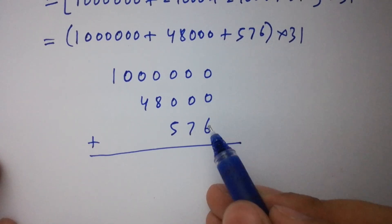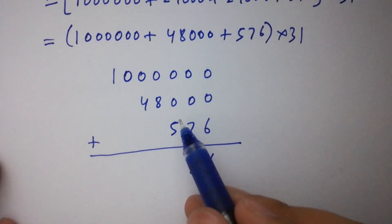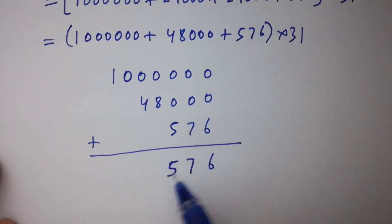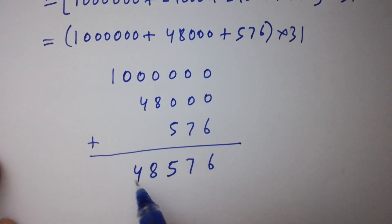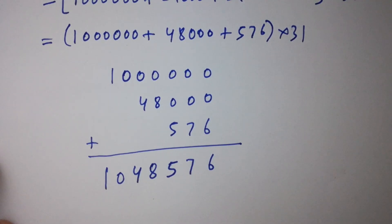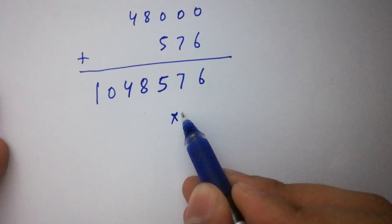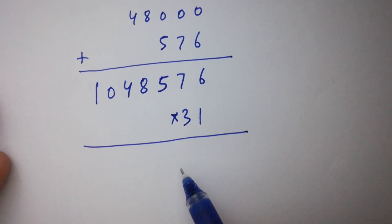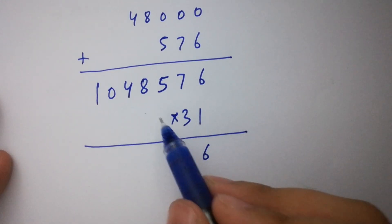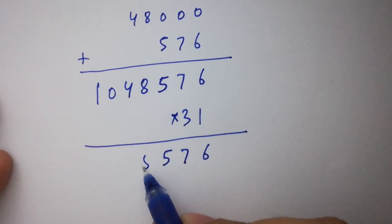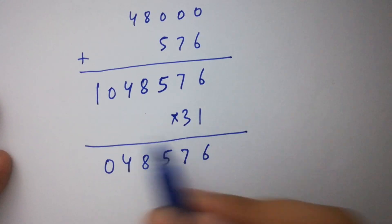Adding digit by digit: 0 plus 0 plus 6 is 6; 0 plus 0 plus 7 is 7; 0 plus 0 plus 5 is 5; 0 plus 8 is 8; 0 plus 4 is 4; 0 plus 4 is 4; 0 as it is; and 1 as it is. So we confirm 1,048,576. Next, multiply by 31: multiplying by 1 first gives 1,048,576.